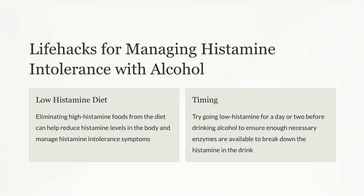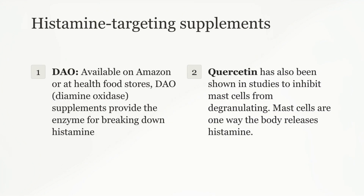Eliminating high histamine foods from the diet can help reduce histamine levels in the body and manage histamine intolerance symptoms. Try going low histamine for a day or two before drinking alcohol to ensure enough necessary enzymes are available to break down the histamine in the drink. DAO supplements provide the enzyme for breaking down histamine if your body is not producing enough.